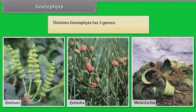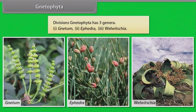Gnetophyta: Division Gnetophyta has three genera: Gnetum, Ephedra, and Welwitschia.